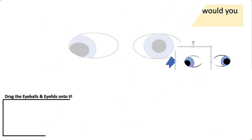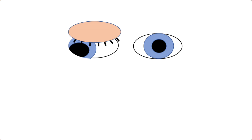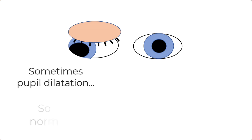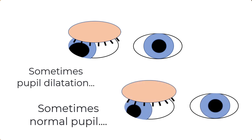In a cranial nerve 3 palsy you will always have ptosis and issues with eye movements in most directions, and sometimes you will have pupil dilatation and sometimes you won't. So what's the deal with this pupil? Why is it so variable? This is super easy — let's explore that now.